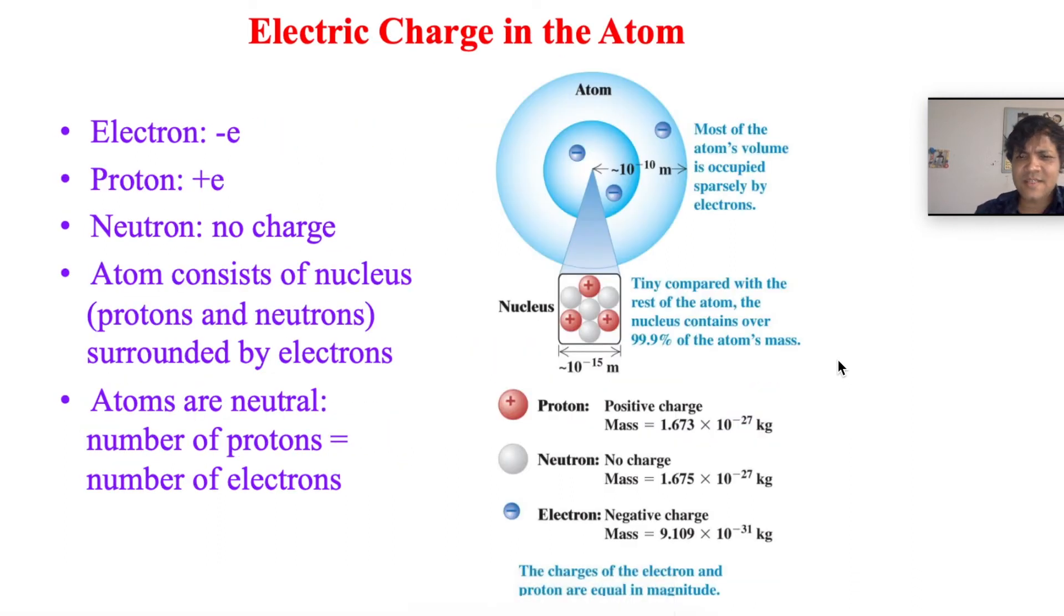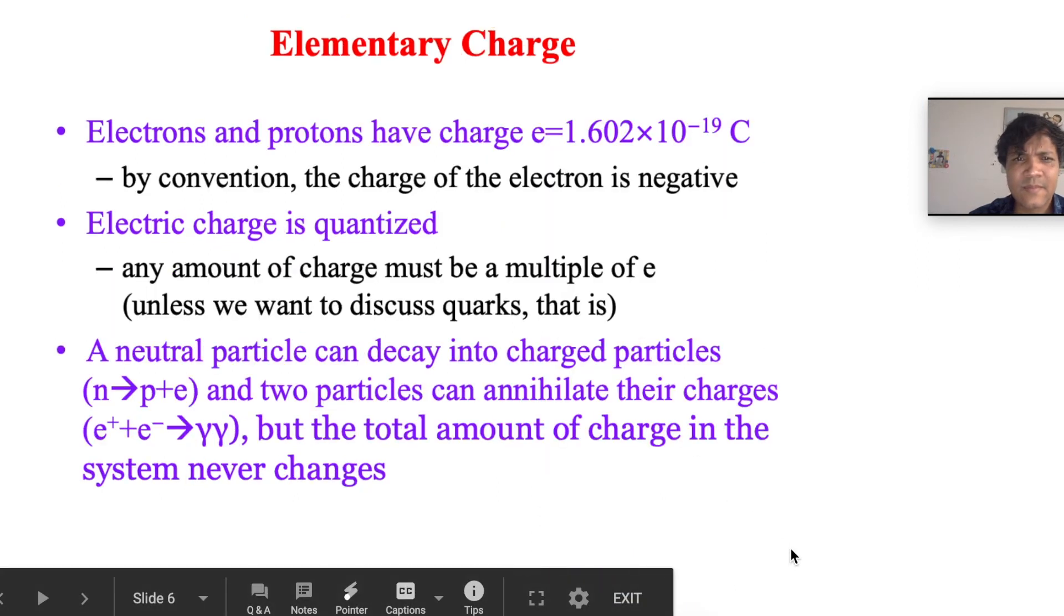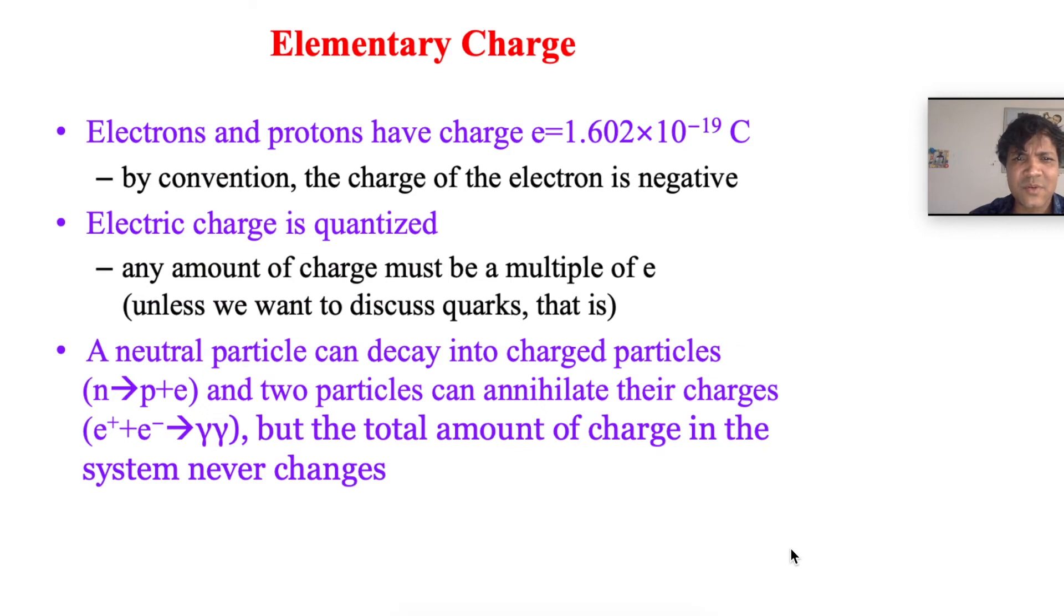Proton mass is 1.67 times 10 to the negative 27 kilograms. Neutron mass is 1.67 times 10 to the negative 27 kilograms. But electron mass is very small compared to the mass of protons and neutrons. Electrons and protons have charge 1.6 times 10 to the negative 19 coulombs. By convention, the charge of the electron is negative.